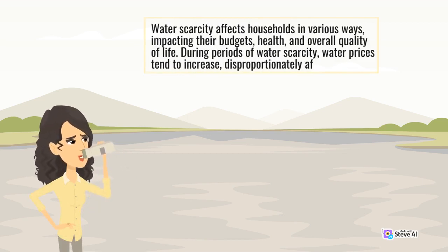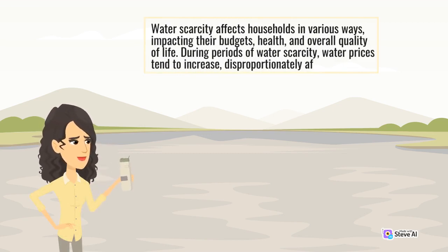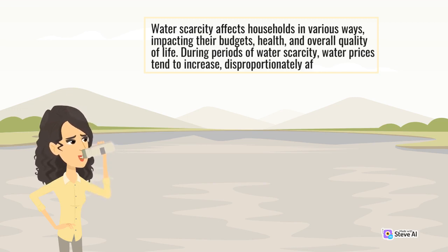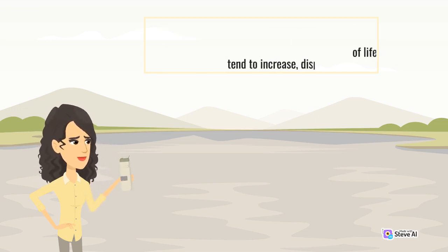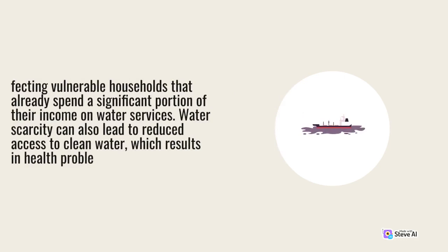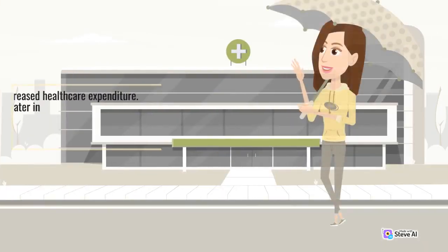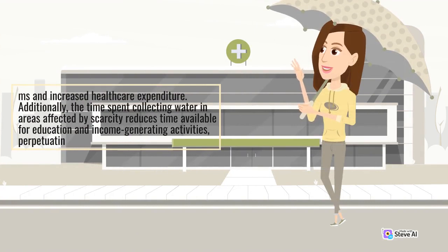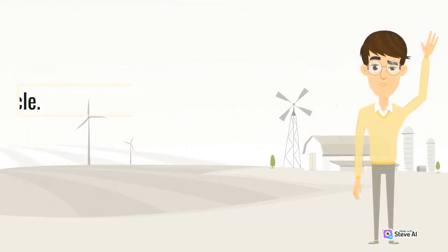Water scarcity affects households in various ways, impacting their budgets, health, and overall quality of life. During periods of water scarcity, water prices tend to increase, disproportionately affecting vulnerable households that already spend a significant portion of their income on water services. Water scarcity can also lead to reduced access to clean water, which results in health problems and increased healthcare expenditure. Additionally, the time spent collecting water in areas affected by scarcity reduces time available for education and income-generating activities, perpetuating the poverty cycle.